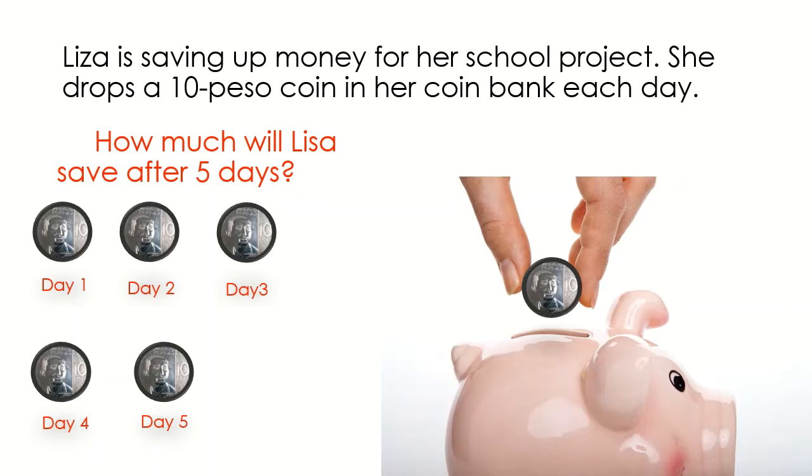Help me count her money. Since it's 10 peso coin, let's count by 10: 10, 20, 30, 40, 50. Lisa has 50 pesos. As we count 10, 20, 30, 40, and 50, this method is called skip counting.